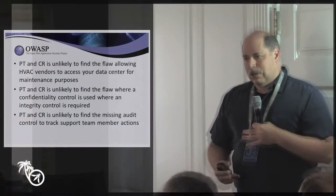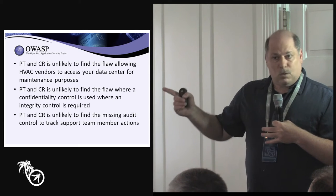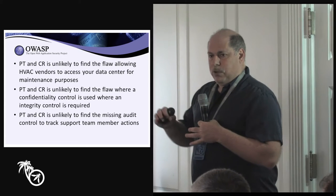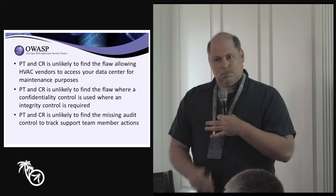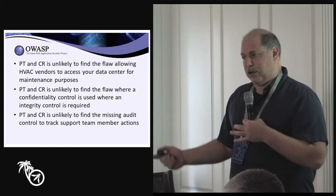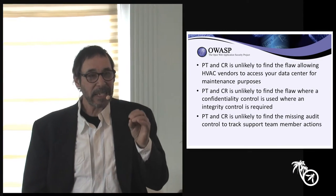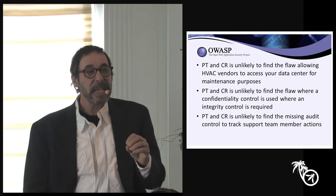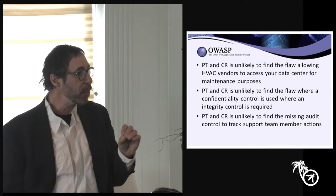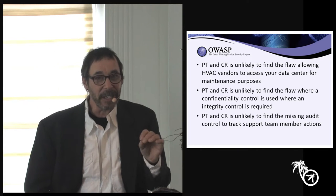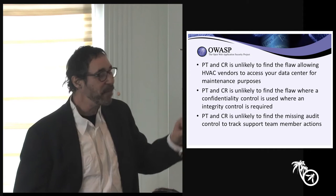Pen test and code review are not going to find that missing audit control keeping track of people accessing critical systems. The fact that you're doing a pen test and a code review is great news, but there are about 18 other things you have to do. This is one of them — you need to do threat modeling or something that looks at secure design.